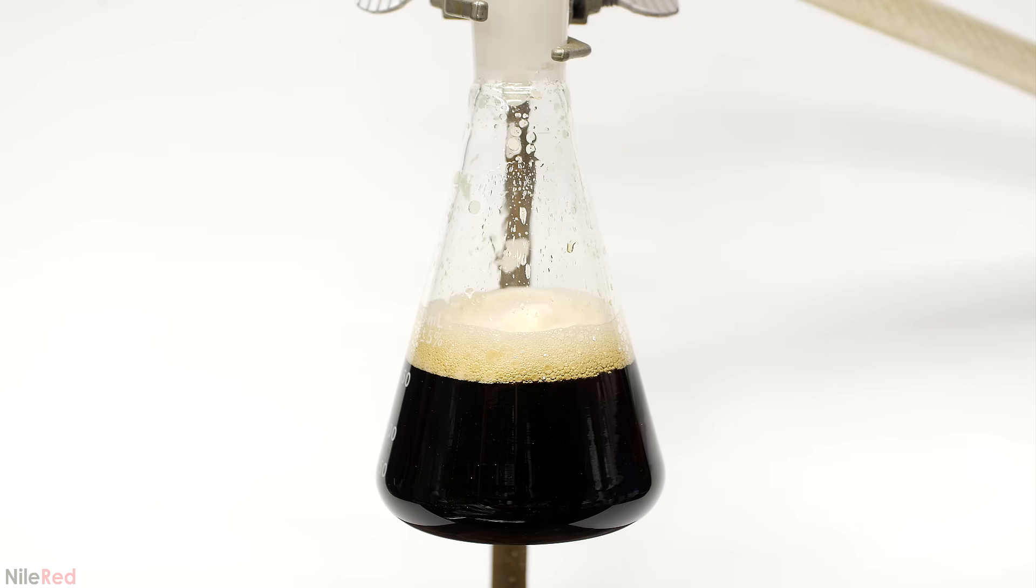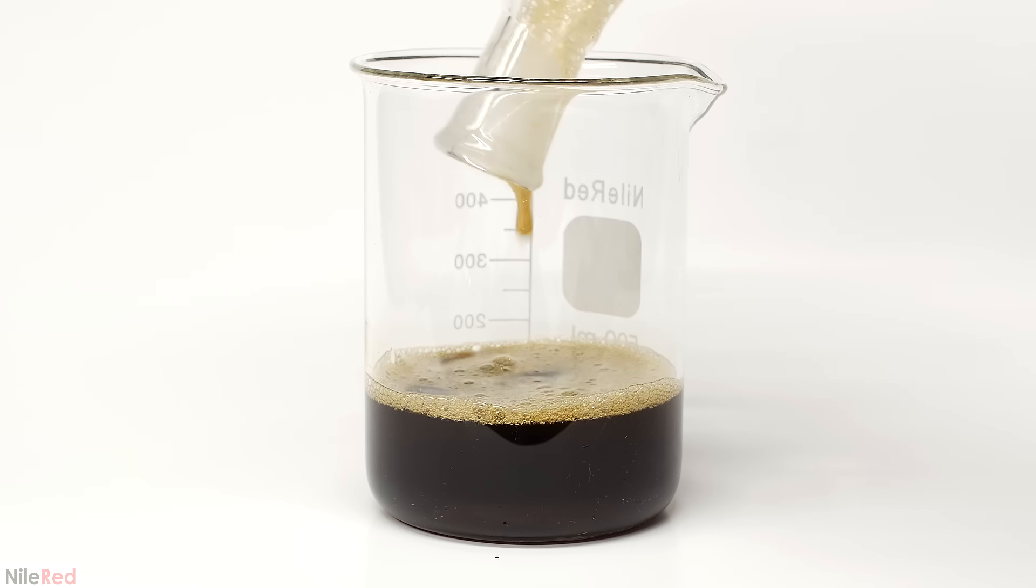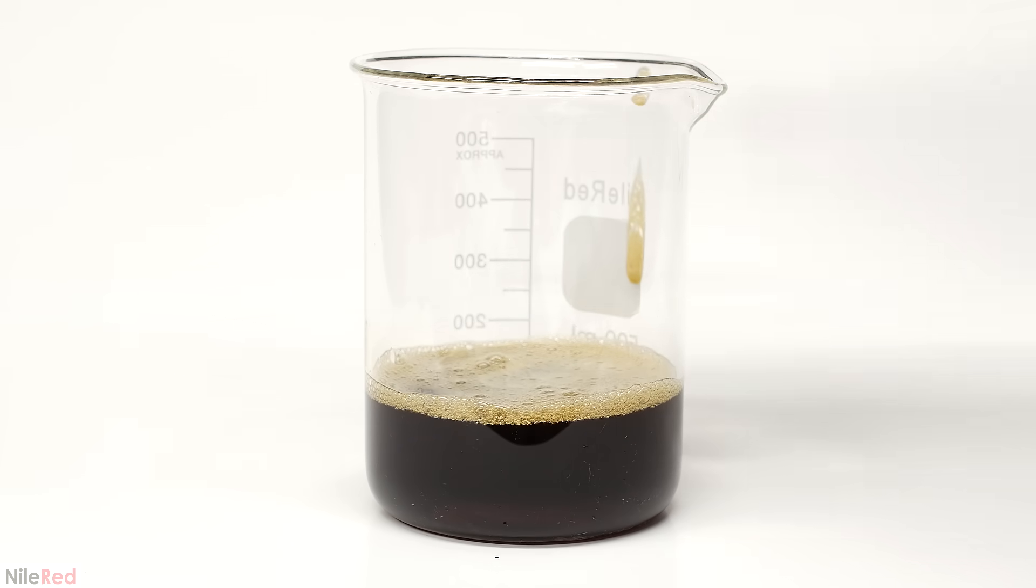In the flask below, I have all the liquid that passed through the filter, which is extremely dark and nearly black. This extremely concentrated pee contains all the urea, and to get it out, I'm gonna have to chemically process it.